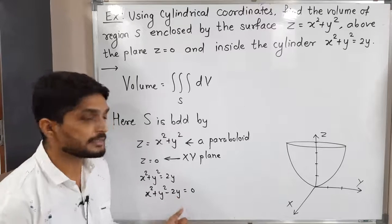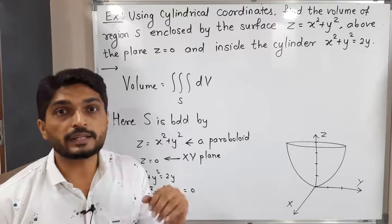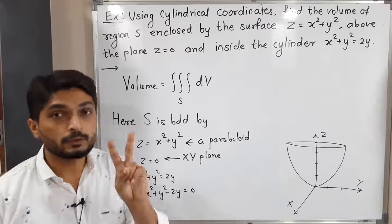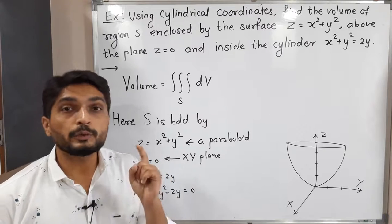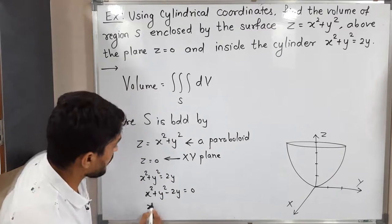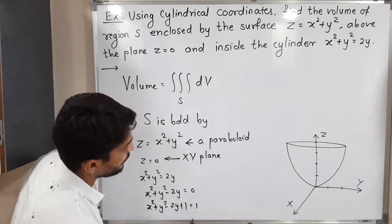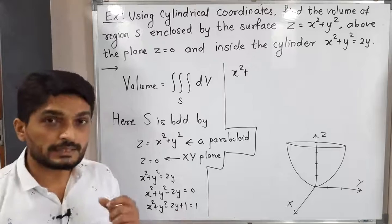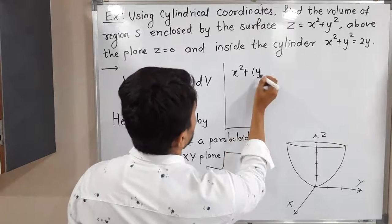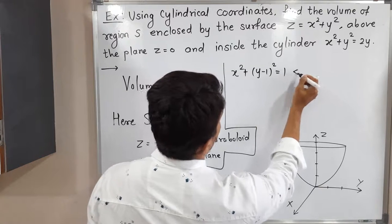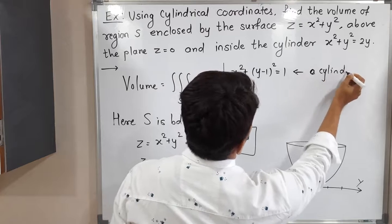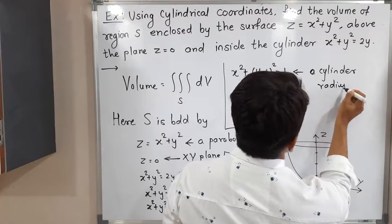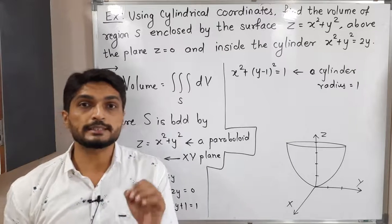We use completing the square. The technique is: take the multiple of y, take its half, and square it. The multiple of y is 2, its half is 1, square is 1. So we add 1 to both sides: x² + y² − 2y + 1 = 1. This gives x² + (y − 1)² = 1, which is a cylinder with radius 1.